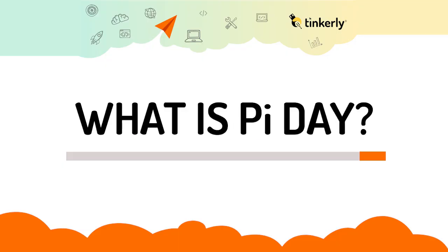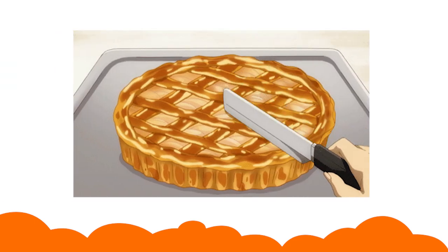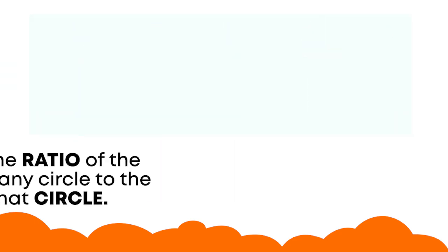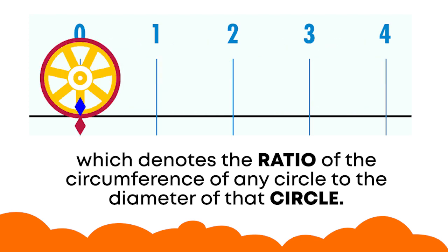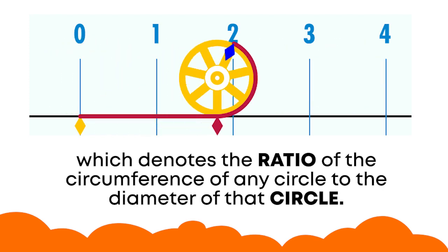Hello everyone! Did you know that the 14th day of the third month, every year, is celebrated as Pi Day? No, it's not a pie that you can eat — it is the mathematical constant pi, which denotes the ratio of the circumference of any circle to its diameter.